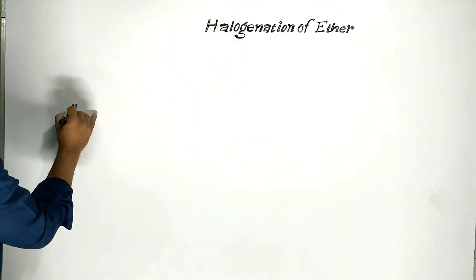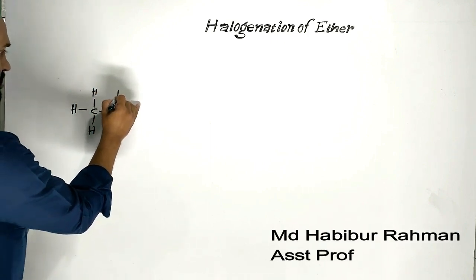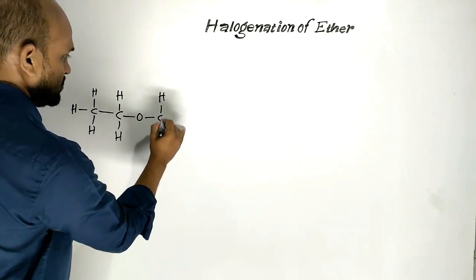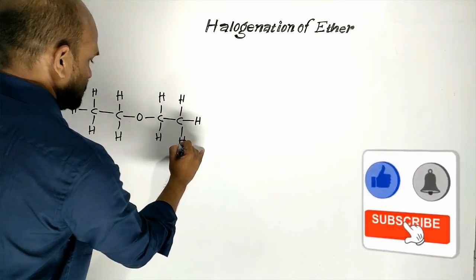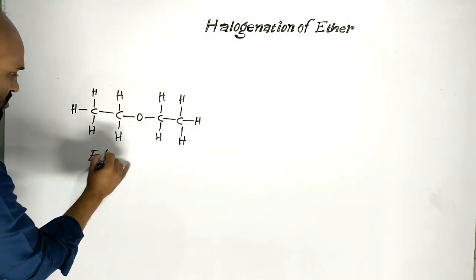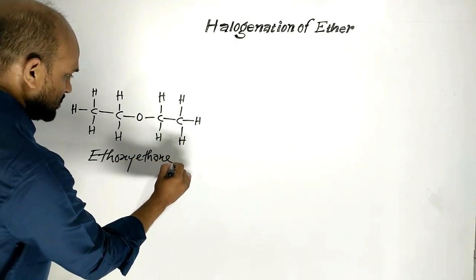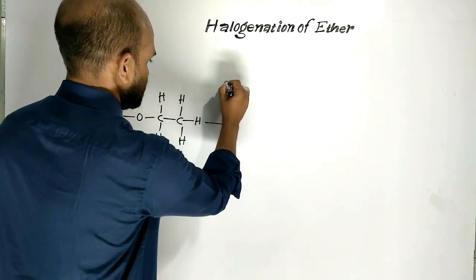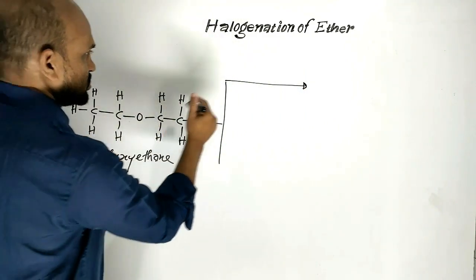Let us write ether. This is diethyl ether or ethoxy ethane. This is also known as ethoxy ethane. When ethoxy ethane is treated with halogen.